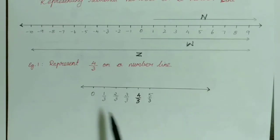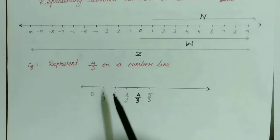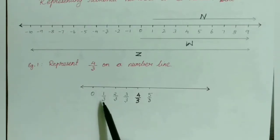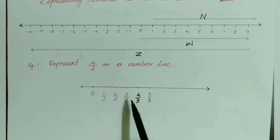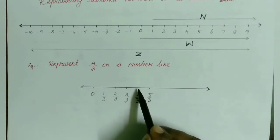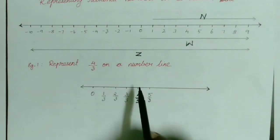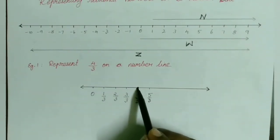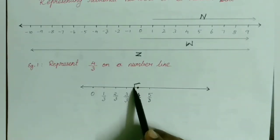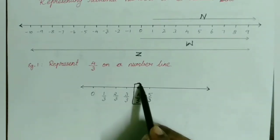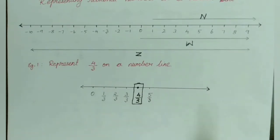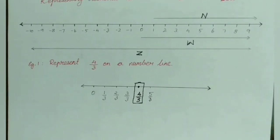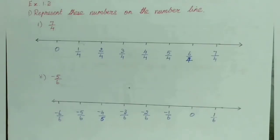Write the numbers as 1/3, 2/3, 3/3, 4/3, etc. Now we want to represent 4/3 on the number line. We have 4/3 over here, so keep a dot and circle it, or put a box like this. That's it — we have marked or represented 4/3 on a number line.